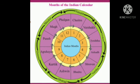Let's read the months of the Indian calendar. They are Chaitra, Vaishak, Jaishtha, Ashad, Shravan, Bhadra, Ashwin, Kartik, Agrayan, Posh, Mag and Falgun.